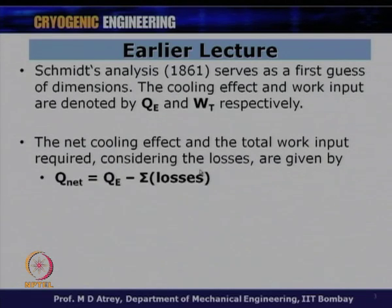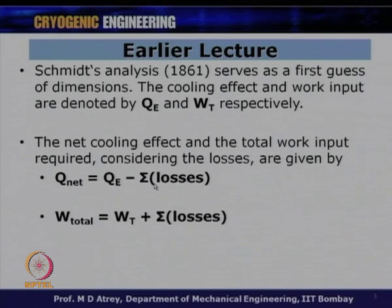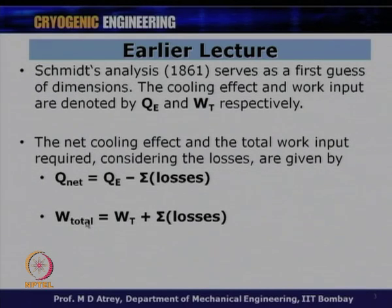If we consider losses, the net cooling power delivered is QE predicted by Schmitt's analysis minus the sum of all losses. Similarly, the total work input equals WT from Schmitt's analysis plus the sum of all losses. To obtain the actual Q_net, I must calculate all losses and subtract them from QE; to get W_total for a practical system, losses are added to WT.